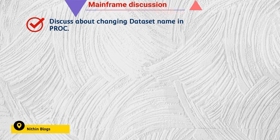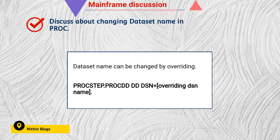The next question: discuss about changing a dataset name in a PROC. This is regarding overriding the dataset name. For overriding a dataset name in a PROC, as shown in the screenshot, we provide: proc-step-name dot proc-DD-name, which is already there and we are going to replace. Then we use DD DSN equal to the overriding dataset name — the new name we want to give — followed by DISP equal to SHR. This is how we override: proc-step-name dot DD-name, DSN equal to the new name.